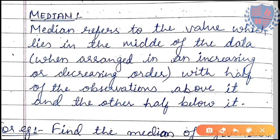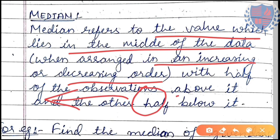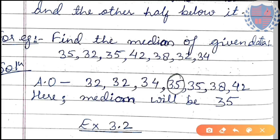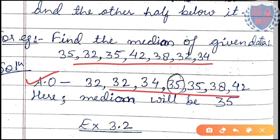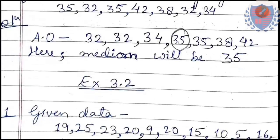Next topic is median. Median refers to the value which lies in the middle of the data when arranged in increasing or decreasing order — half the observations on the left, half on the right. Find the median of the given data: first arrange them in ascending order. There are 7 numbers — an odd count — so the median is the middle most term, which is 35. Three numbers lie on each side.